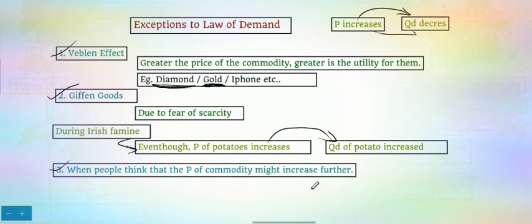The third exception is when people expect that the price of a commodity might increase further in the future, as discussed with the COVID-19 example — people purchased vegetables and related goods out of fear that prices would rise. In these three situations, even though price increases, quantity demanded also increases. Other than these exceptions, the law of demand is applicable almost everywhere. It is a very basic and important law in agricultural economics and general economics.